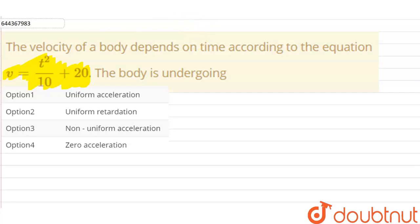First of all, let us know what is uniform acceleration. Uniform acceleration is when our acceleration is constant and positive.